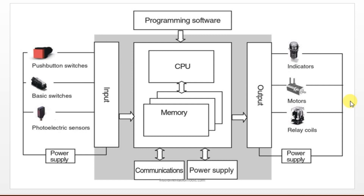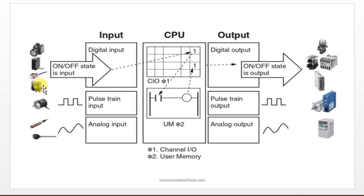The structure of Omron PLC is similar to the generalized architecture of a PLC. We have an input module on the left side and an output module on the right. All input devices are connected with the input module and output devices are connected with the output module. Inside the CPU we have a processor, memories, and communication software. A power supply module is also present.